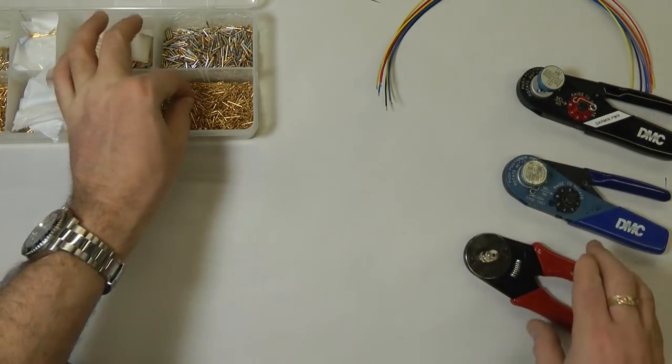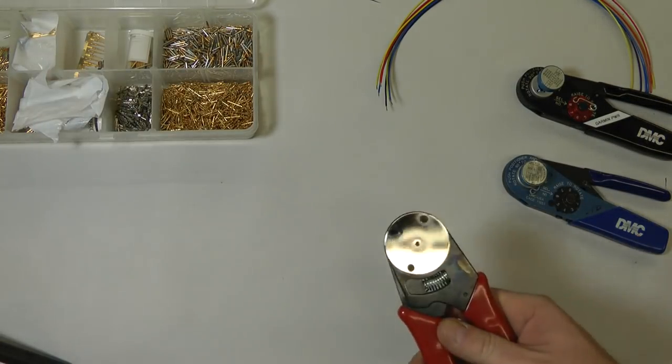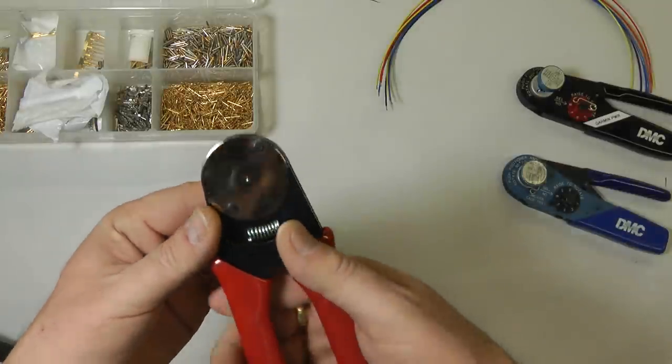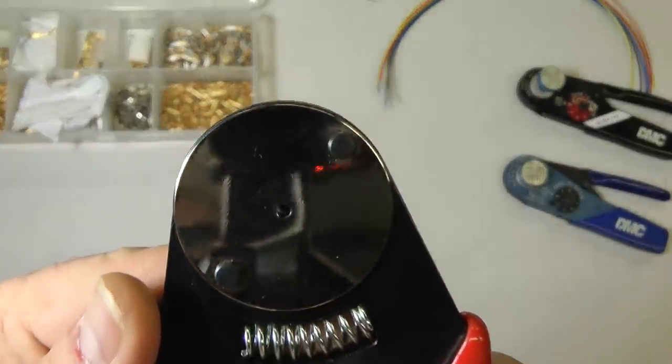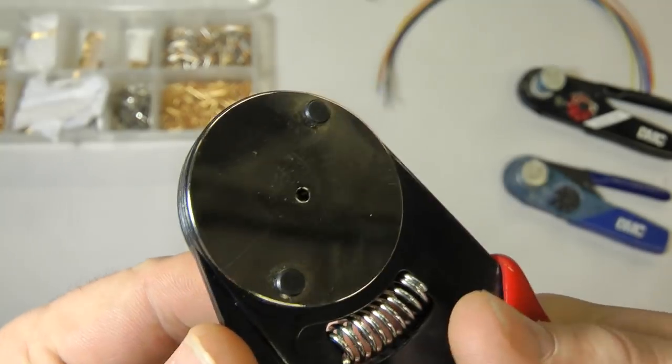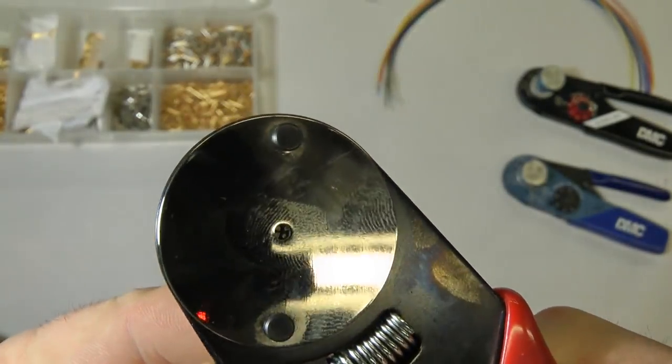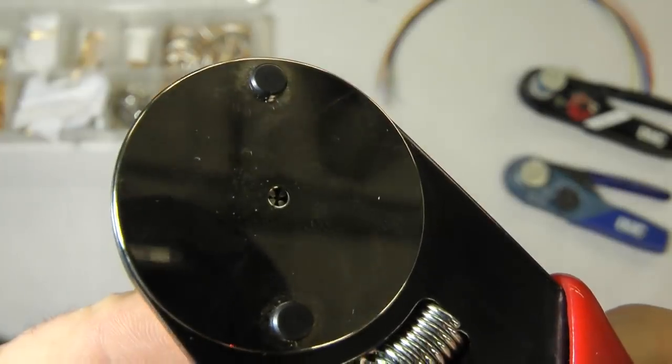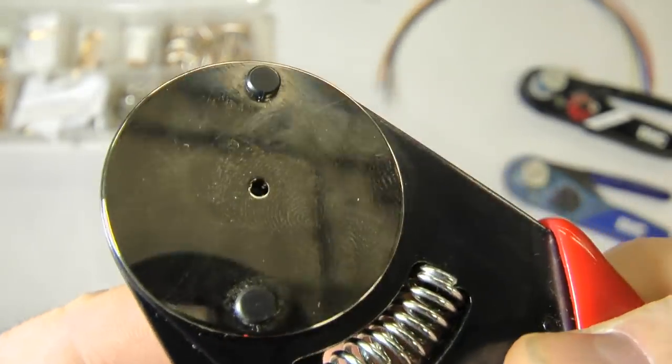You must use, or you should use, a standard indent crimper. They crimp from four sides. If we look real close, you may or may not be able to see the jaws inside of this one where there's four separate teeth coming in. You can see that there, and it squeezes it from four sides. And that's what we want to use.